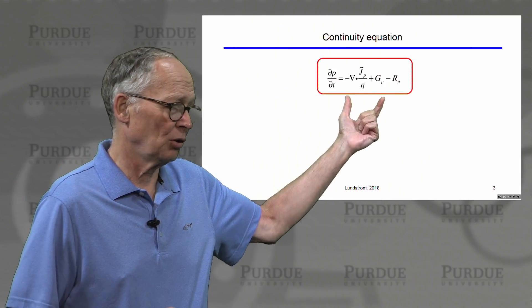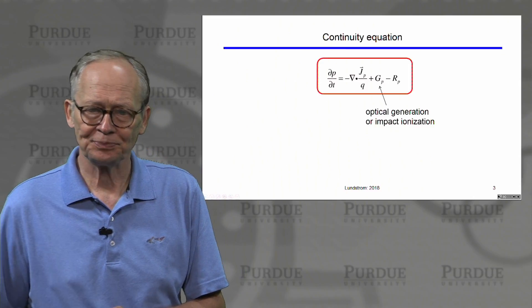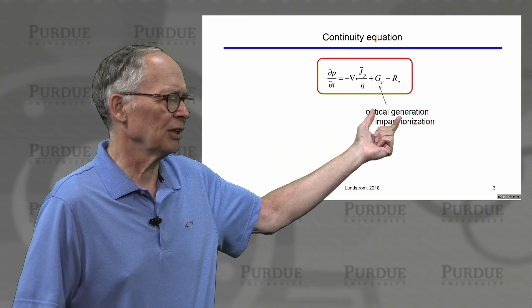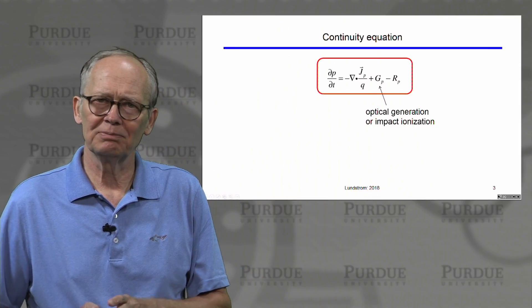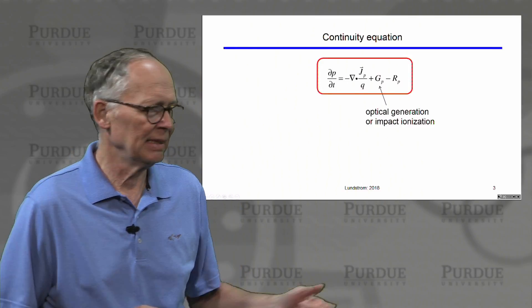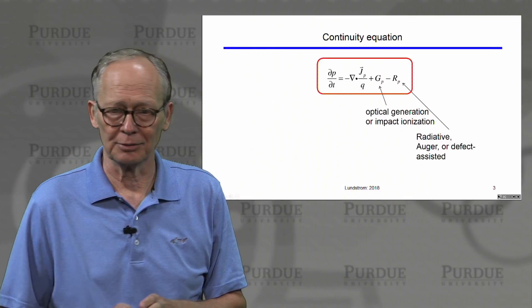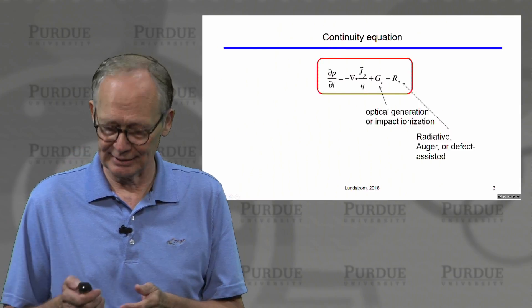The first one was the hole continuity equation. There was also an electron continuity equation. Our generation terms here indicate explicit generation processes such as optical generation or impact ionization. There are also recombination terms that can be positive or negative. When they're negative, they're also generation processes.